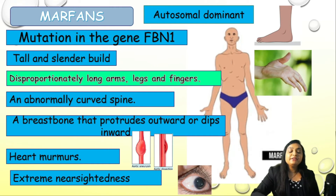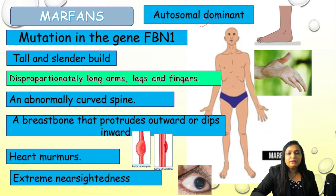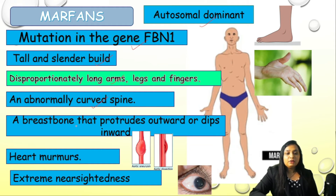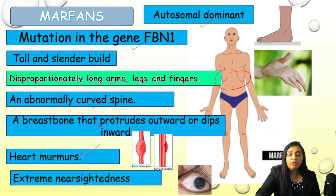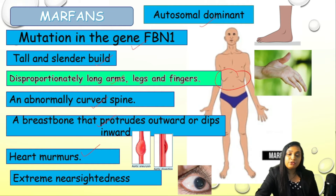Additionally for Marfan syndrome: it is autosomal dominant with mutation in gene FBN1. Features include tall and slender build, disproportionately long arms, legs, and fingers, abnormally curved spine, breast bone protruding outward or dipping inward (chest deformity), presence of heart murmur, and extreme nearsightedness. These are the important findings to remember when suspecting Marfan syndrome.